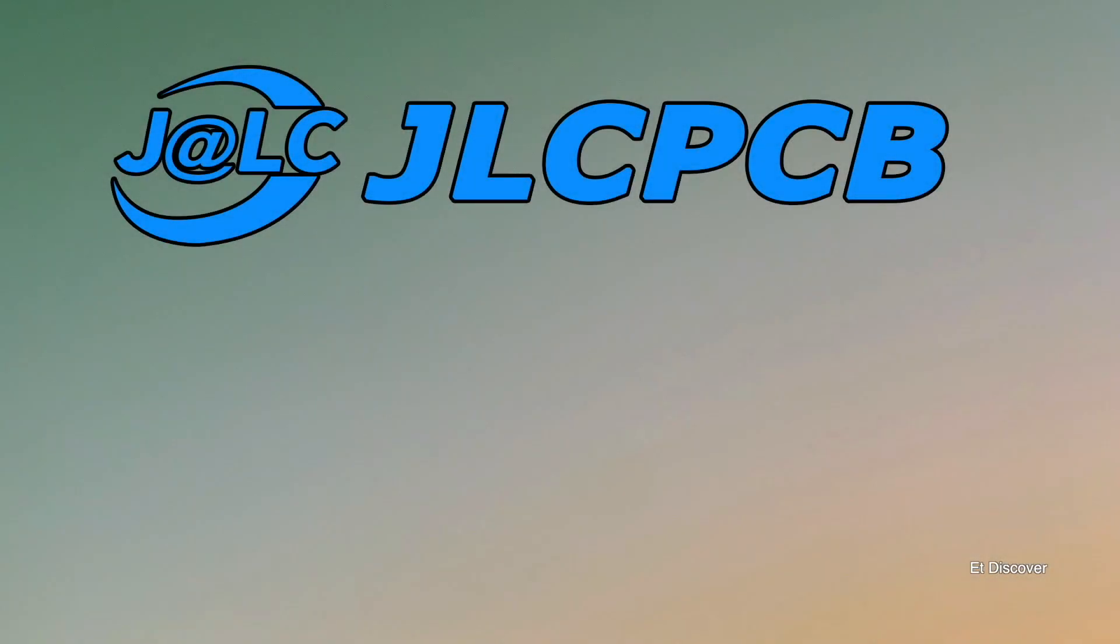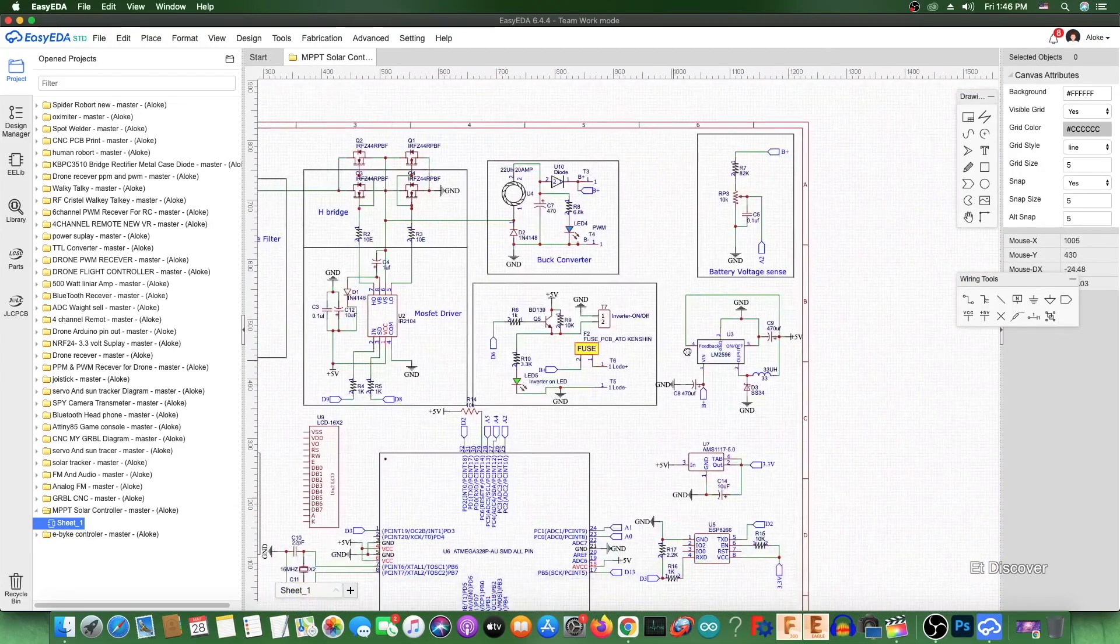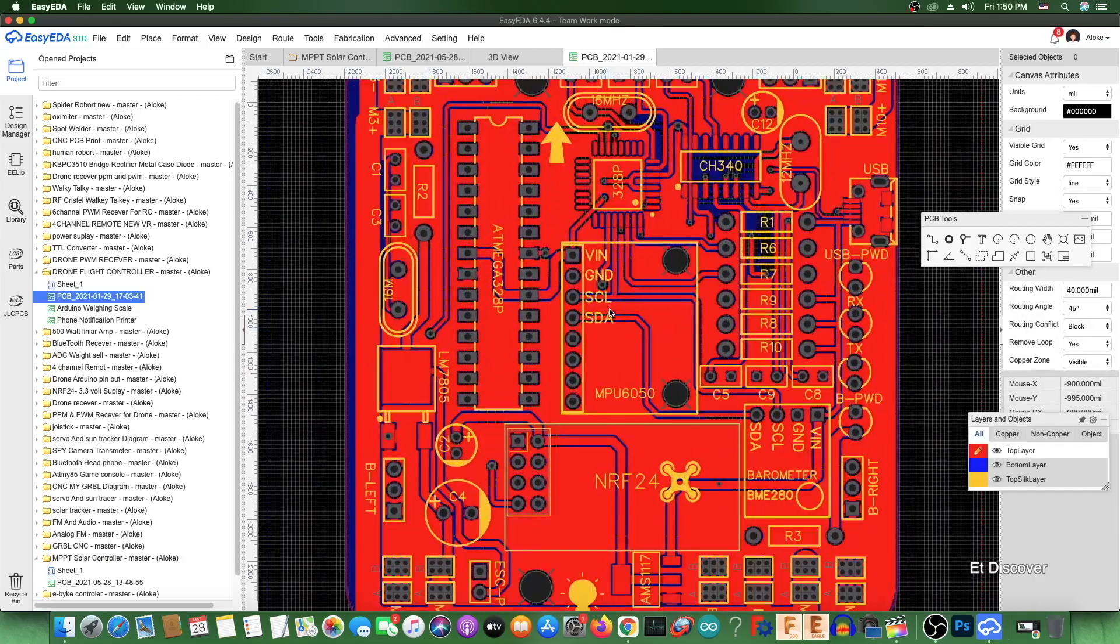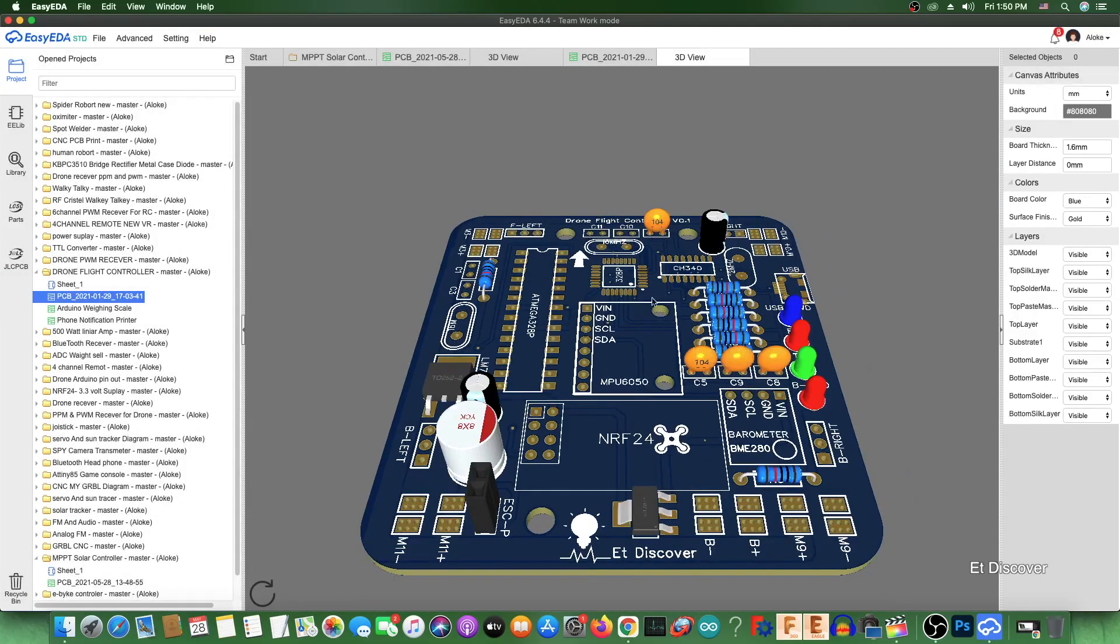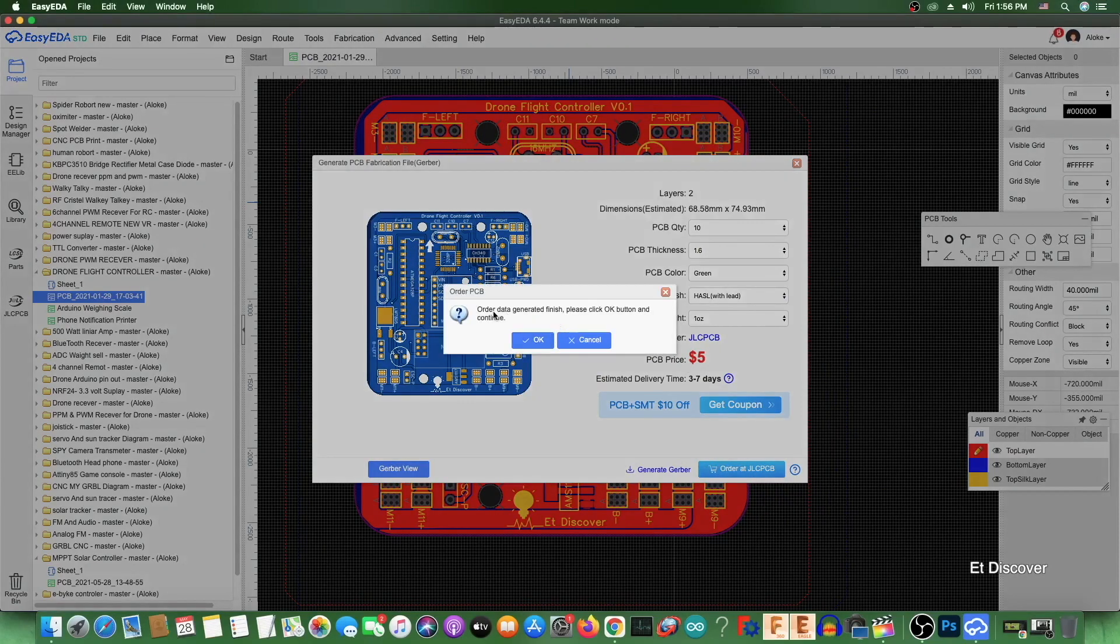This video is sponsored by JLCPCB and EasyEDA. And I have been using EasyEDA for the last 5 years to make my PCB. In the same way, the drone PCB I made in EasyEDA software. And with that you can order your PCB at JLCPCB from EasyEDA.